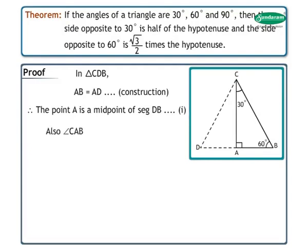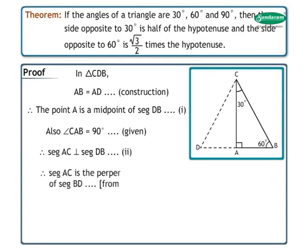Also, it is given that angle CAB is equal to 90 degrees. Therefore, segment AC is perpendicular to segment DB. Mark this as statement 2. Therefore, from statements 1 and 2, we get segment AC is the perpendicular bisector of segment BD.